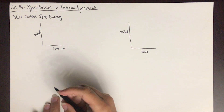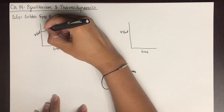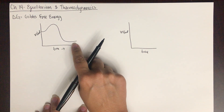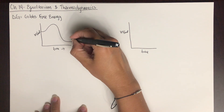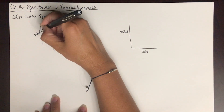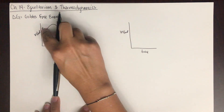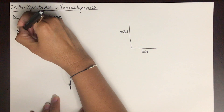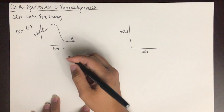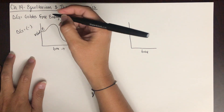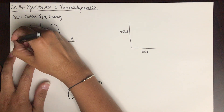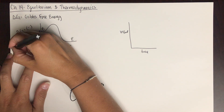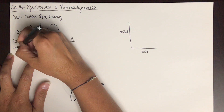There's a reaction called an exergonic chemical reaction. This is where the overall free energy of the products is lower than the free energy of the reactants. This means we would have an overall delta G that is negative — this is an exergonic reaction, and it is also a spontaneous reaction.